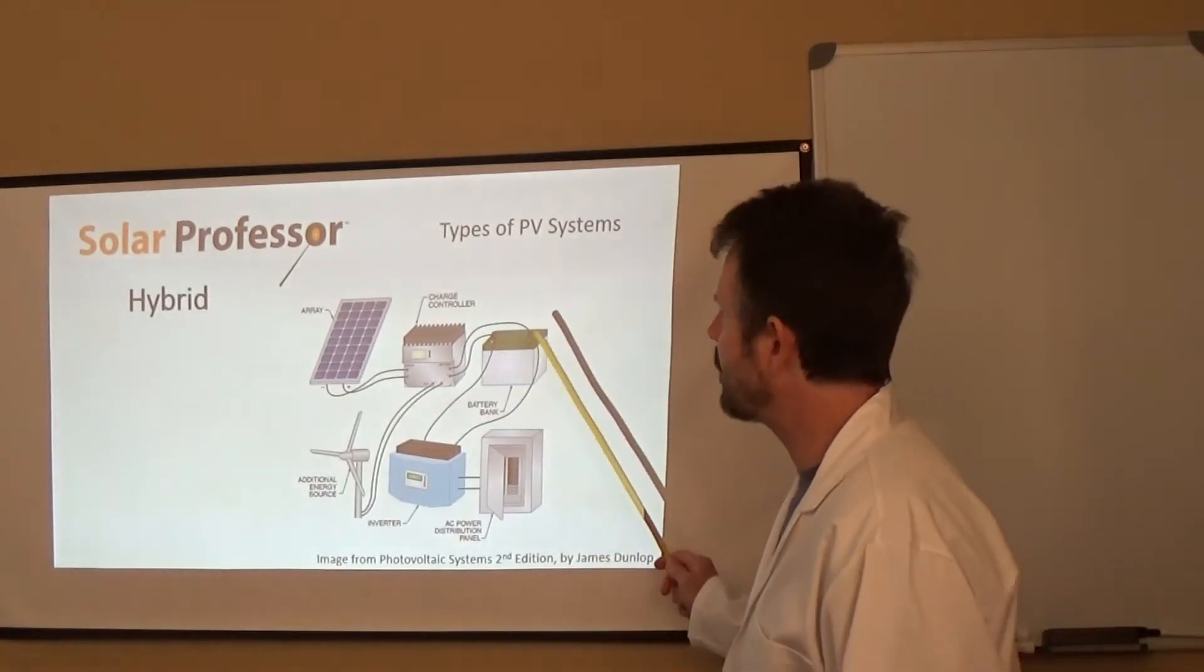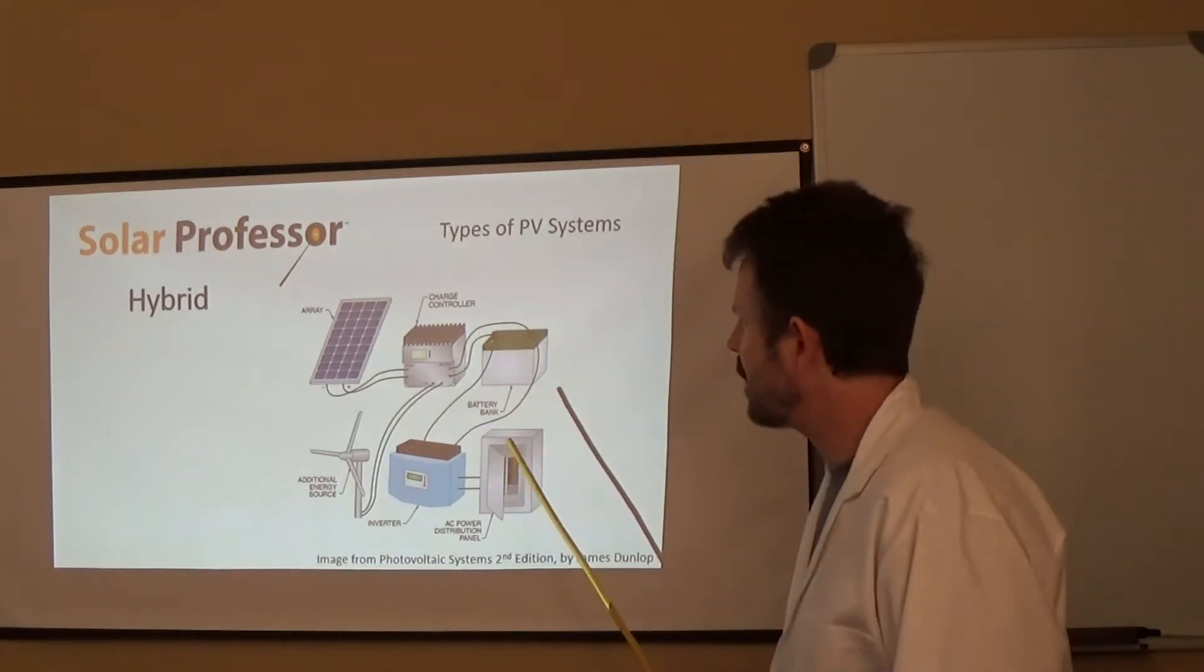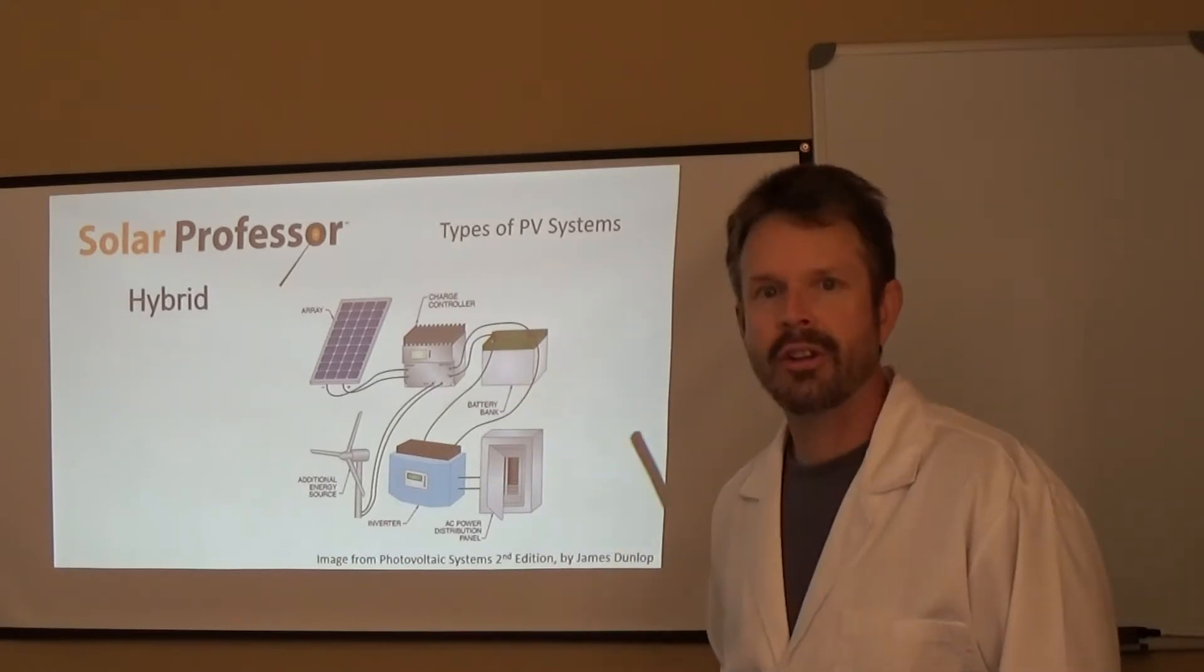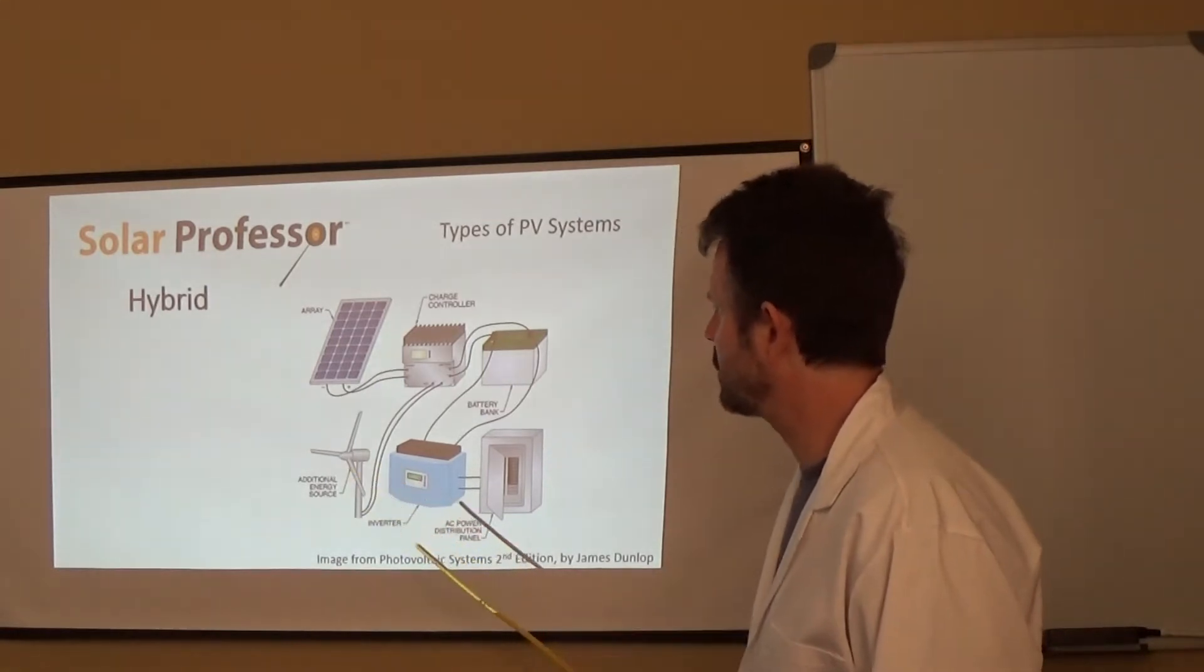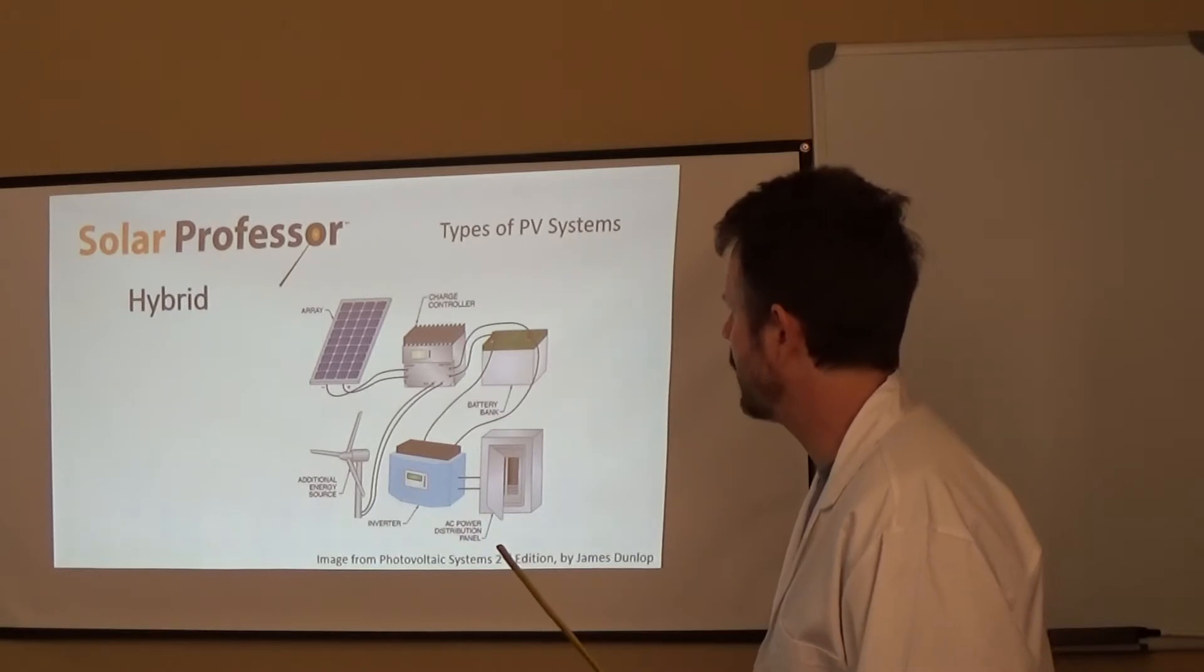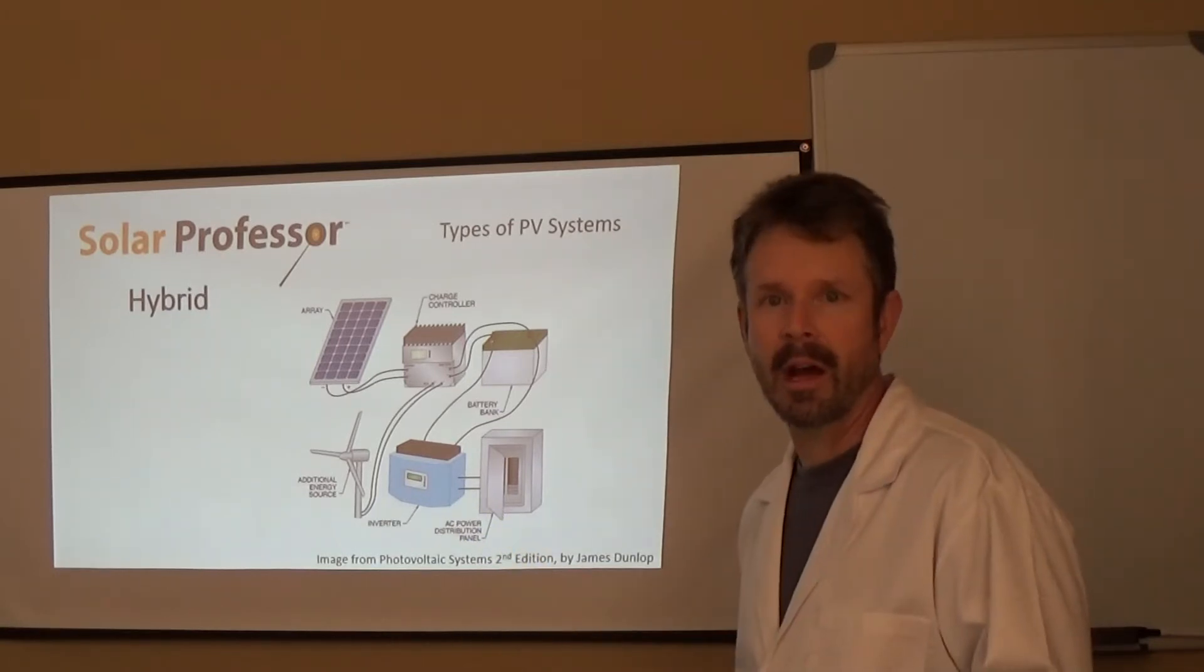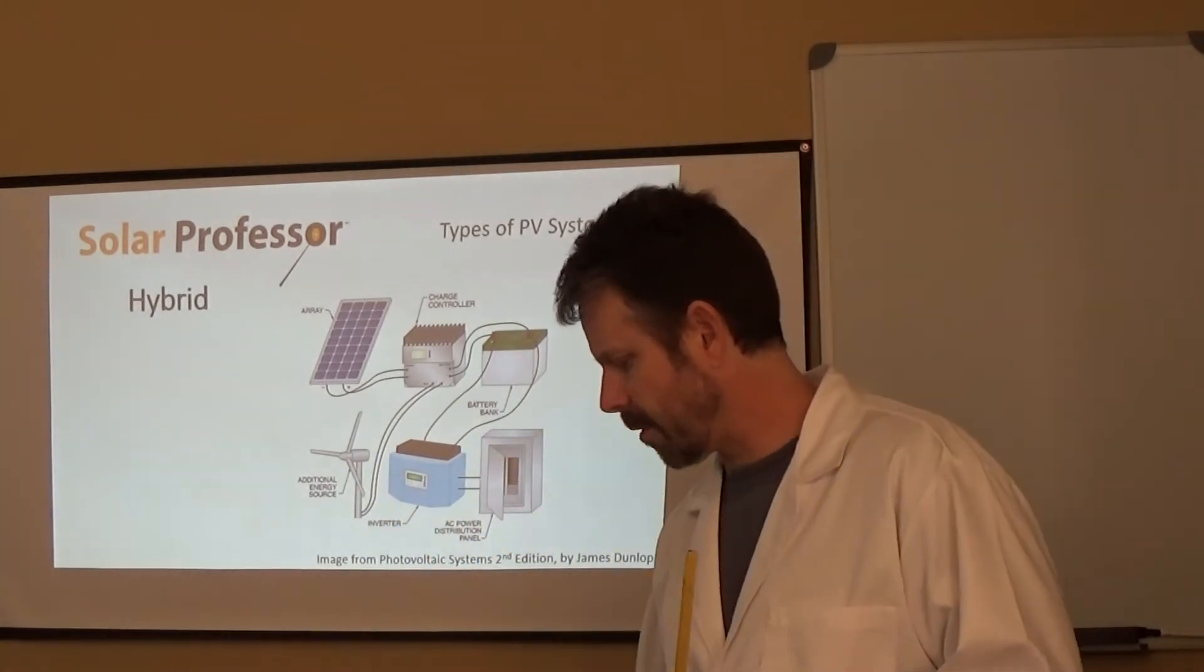Let's look at a few more here real quickly. This is a hybrid system. So a hybrid system, same thing as an off grid system. However, we have another energy source available with this system as well. And in this particular case, it's a wind turbine. And so that's what a hybrid system basically looks like. You could have a grid tied hybrid system or you could really have an off grid hybrid system. This is showing the off grid components as well as the inverter.